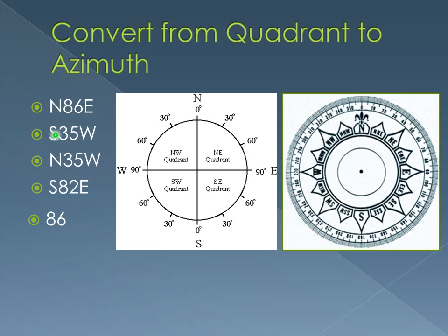This one is south 35 west. We start at south and go 35 degrees to the west. So on the azimuth we are at 215 — that's about right here. We were at south and went 35 degrees this way, giving us 215.